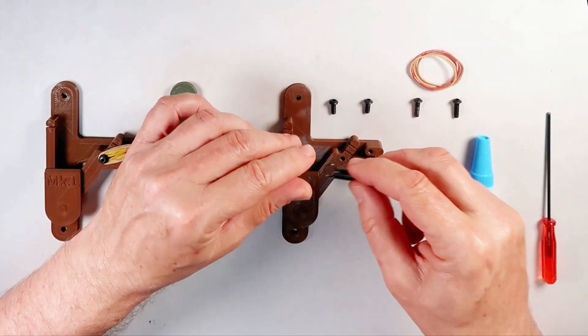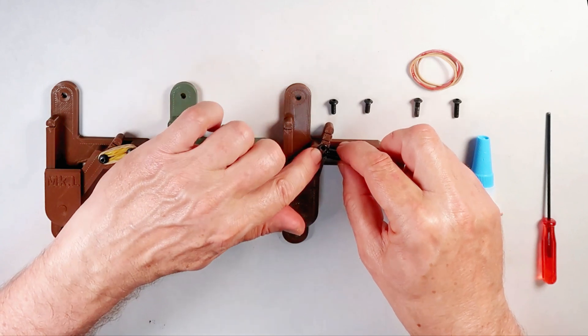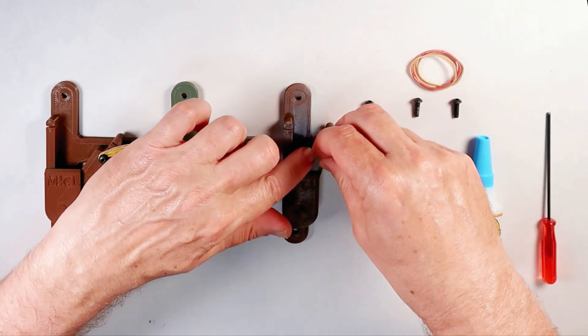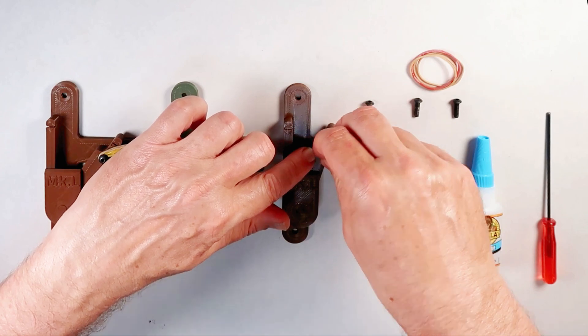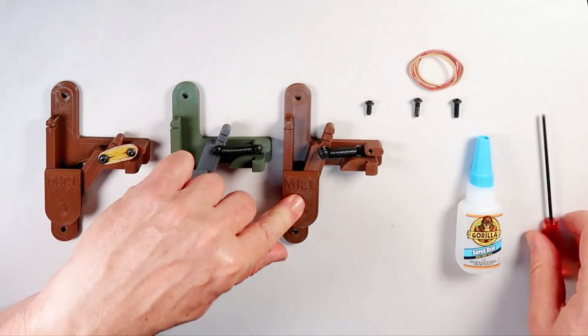An extension spring can be attached with two M4 10mm bolts. Parts are linked in the description and in the instructions included with the file download.